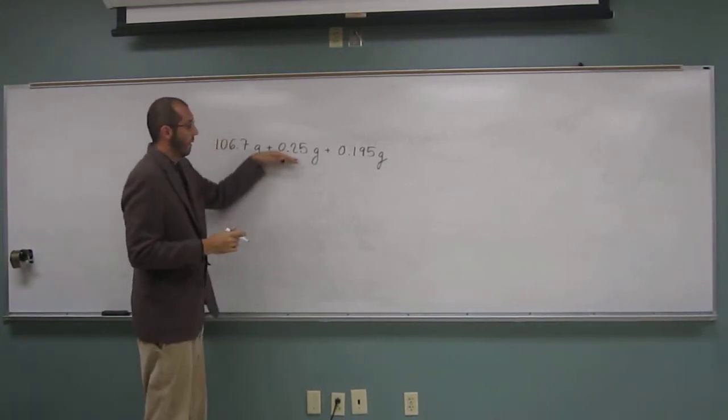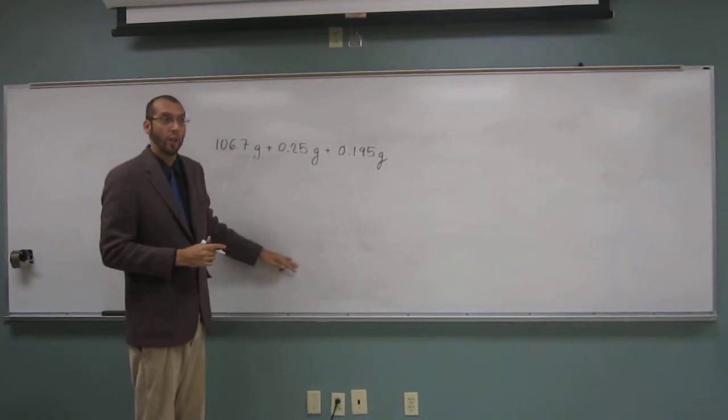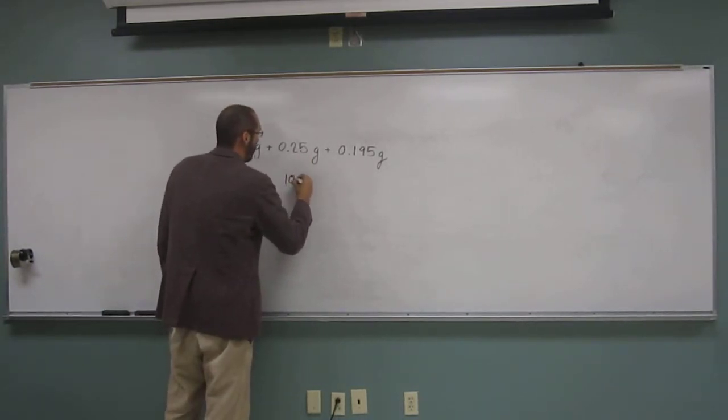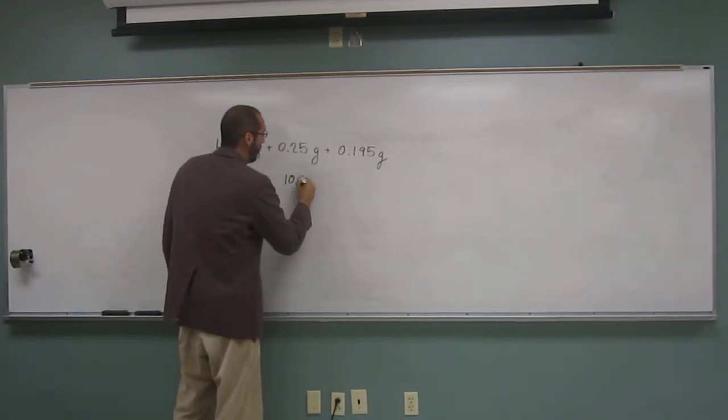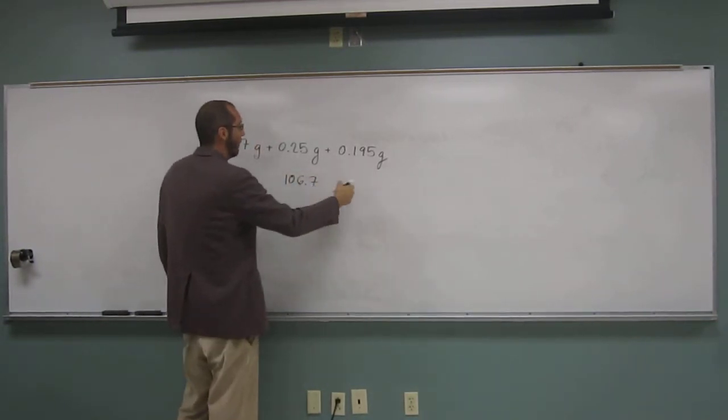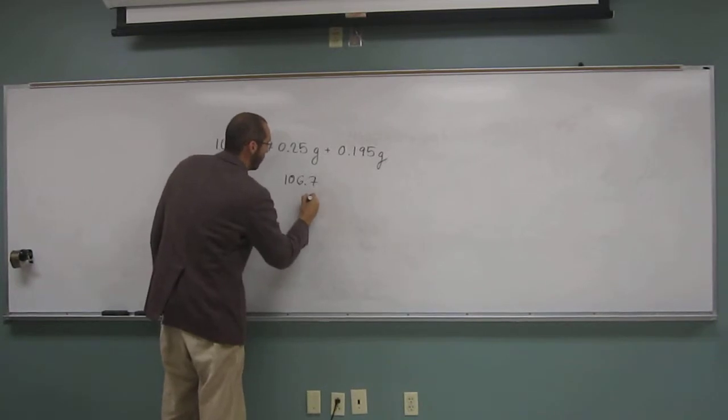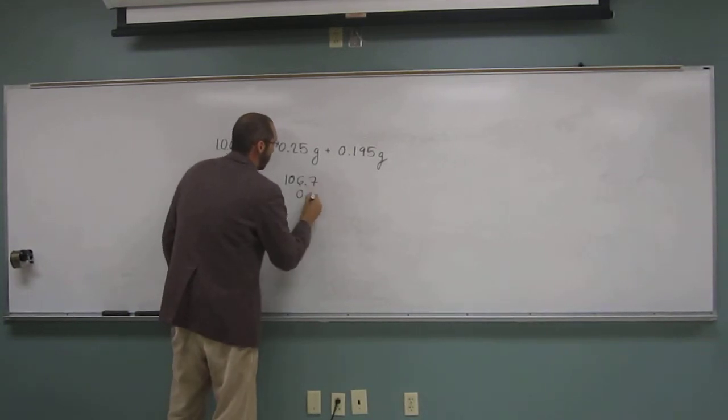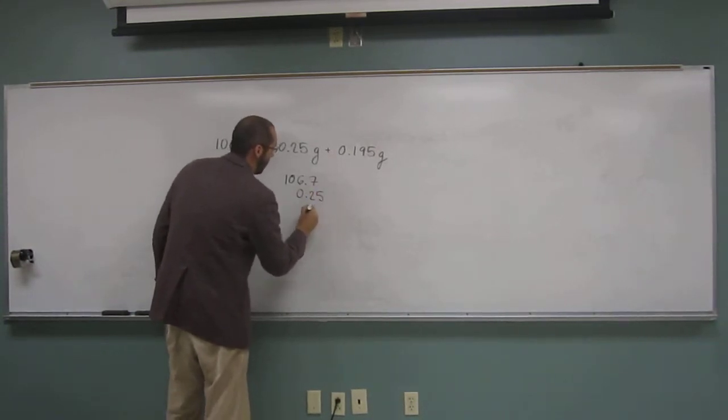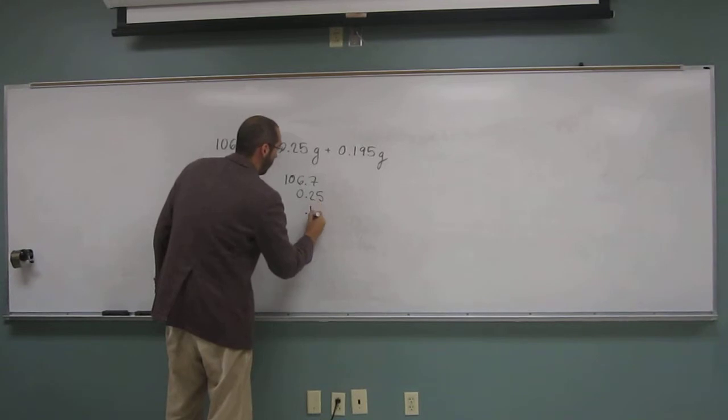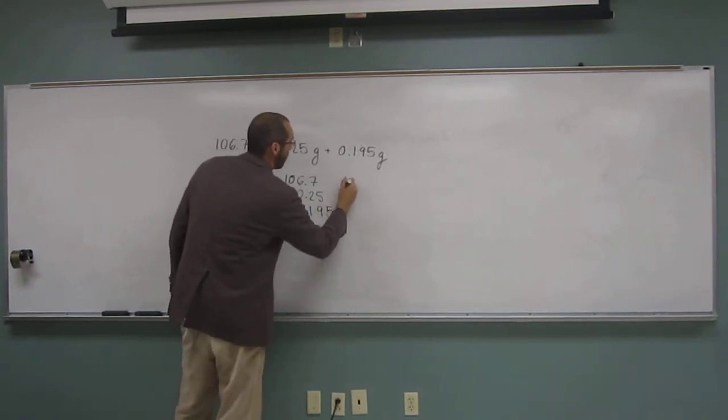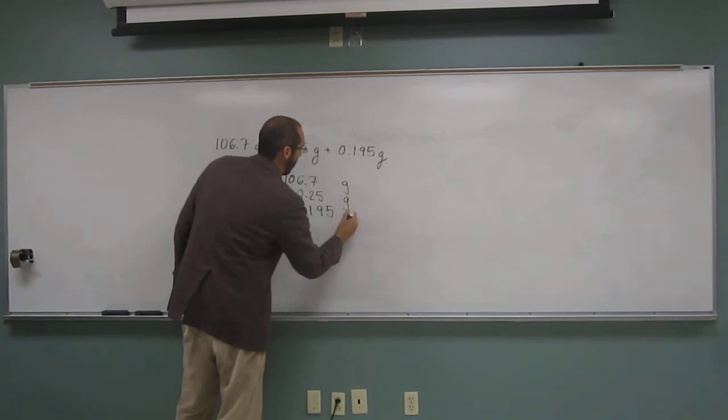So the best way to do it, I think, is to put them on top of each other, so you can see where the decimal point is and what tens, hundreds, or whatever unit to go to after your calculation is over. So 0.25 and then 1, 9, 5, 0, and they're all grams.